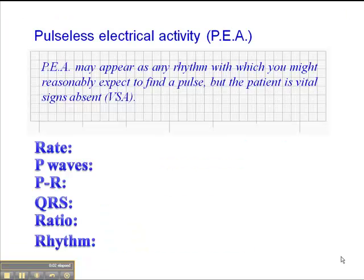I'd like to talk about pulseless electrical activity — this is on page 80 of your workbook. PEA is an interesting rhythm. I call it the Monty Python of cardiac arrest rhythms because PEA can present as any rhythm in which you might reasonably expect to find a pulse, but in fact the patient is vital signs absent. They have some semblance of an organized rhythm on your heart monitor, but they're apneic, unconscious, and pulseless — essentially in cardiac arrest. We treat them like cardiac arrest with CPR and other measures. This is why there's no set rate, P waves, PR, QRS, or rhythm to define it, because it can present like anything. Often PEA presents in an idioventricular rhythm without a pulse, but it could present in a sinus rhythm, junctional rhythm, or any variety of rhythms without a pulse.